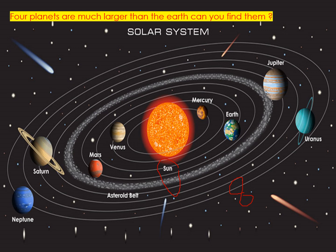There are four planets that are much larger than the Earth. Can you find them? Yes, I want to hear you, my dear students. You can look at the picture and mention each one. Excellent. First one is Jupiter, second one Saturn, third one Uranus, fourth one Neptune. So, the larger planets more than the Earth are Jupiter, Saturn, Uranus, and Neptune.